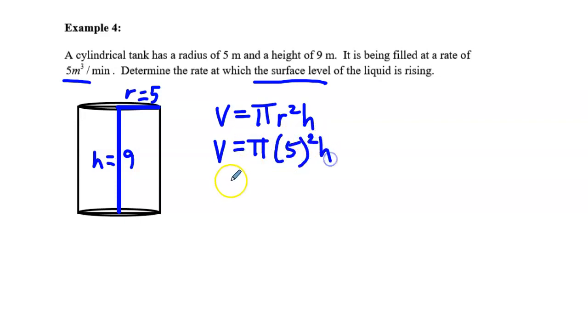If I just sub in 5 for the radius then I'll just end up with V is equal to 25 pi h. That's a really simple linear equation, right?